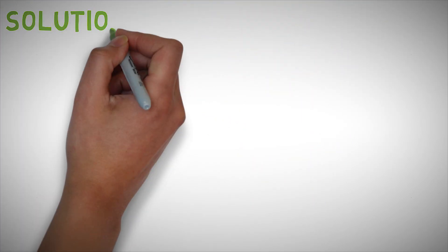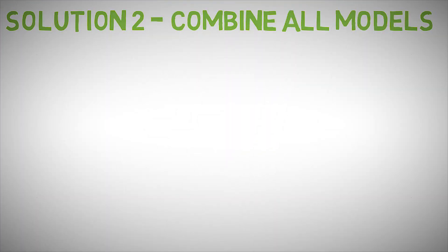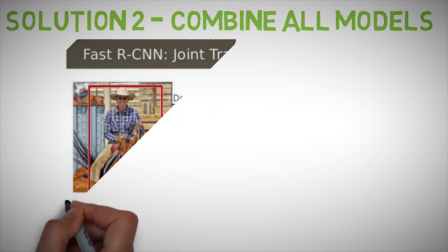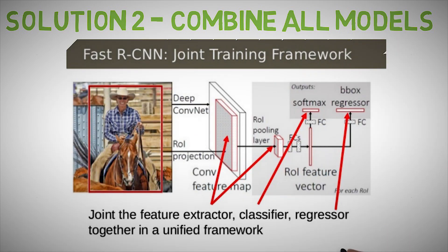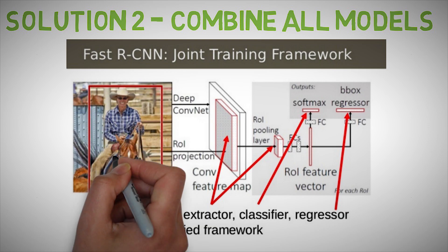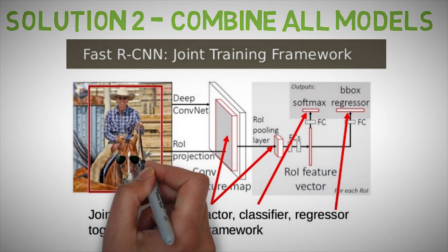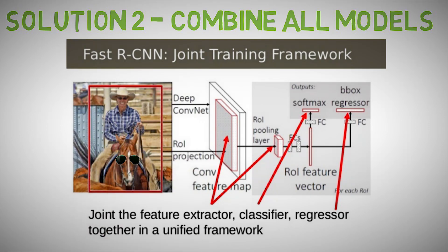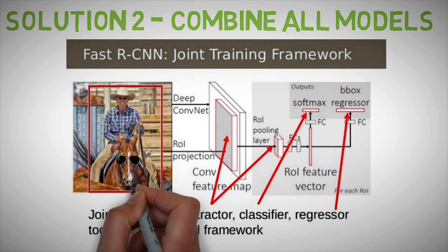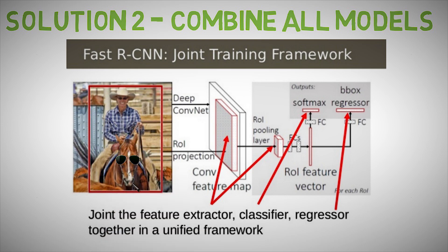Fast R-CNN solution 2: Combine all models into one network. The second insight of Fast R-CNN is to jointly train the CNN, classifier and bounding box regressor in a single model. Where earlier we had different models to extract image features with the CNN, classify with the support vector machine, and tighten bounding boxes with the regressor, Fast R-CNN instead uses a single network to compute all three in one go.